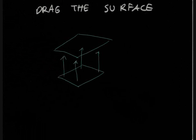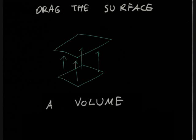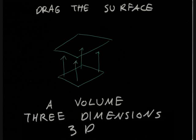Now we can drag the surface perpendicular to itself, creating a volume. It has length, width, and height. It has three dimensions, and thus three directions: back and forth, side to side, and up and down.